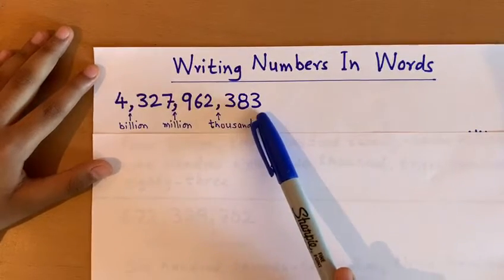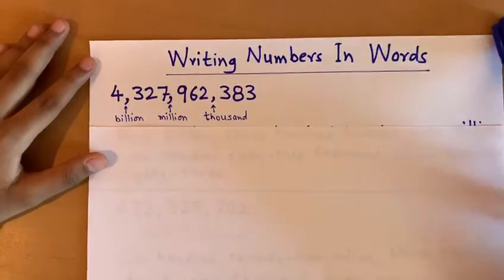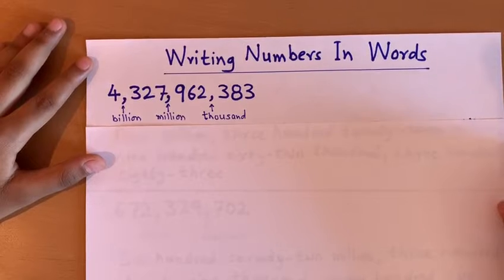You can see that one, two, three, comma; one, two, three, comma; one, two, three, comma, and so on. This is what you should know before you write numbers in words.